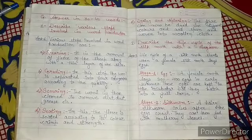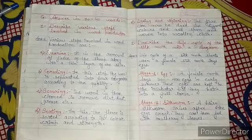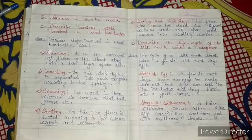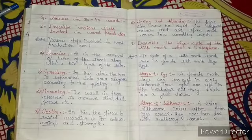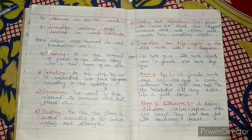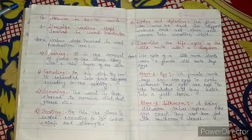Third step hai humaara scouring. Isme kya hota hai — wool mein kuch impurities ya kuch dirt ya dust hoti hai, grease laga hota hai, uske clean ya remove karte hai. So scouring mein kya karte hai — jo bhi aapki impurities ya dirt ya dust hai, uske remove karte hai.